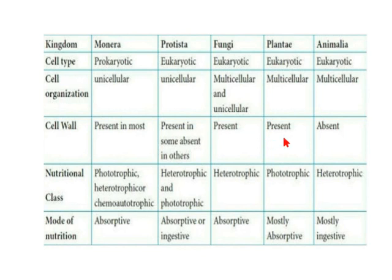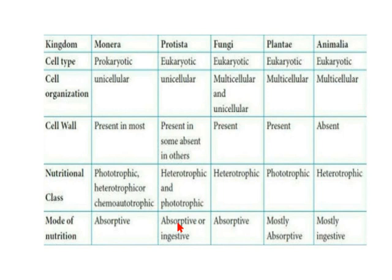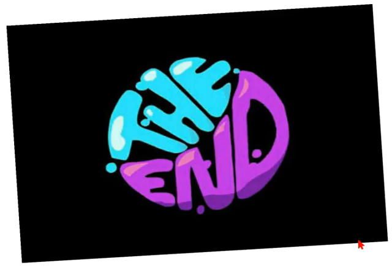In Fungi, the cell wall is present and made of chitin. In Plants it is present and made of cellulose, and it is absent in Animalia. Regarding nutrition: Monera can be phototrophic, heterotrophic, or chemo-autotrophic. Protista are heterotrophic and phototrophic. Fungi are all heterotrophic. Plantae are phototrophic and Animalia are heterotrophic. The mode of nutrition is absorptive in Monera and Fungi, absorptive in Plantae, and ingestive in Animalia. That covers the five kingdom classification.